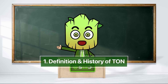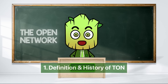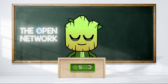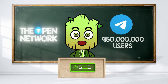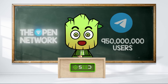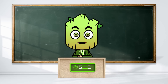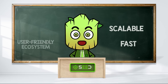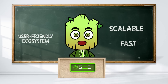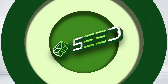TON, short for The Open Network, is a cutting-edge blockchain platform built on Telegram, the messaging app with more than 950 million users. It's like the blockchain world's new favorite hangout spot, taking on the role of a scalable, fast, and user-friendly ecosystem for every user.